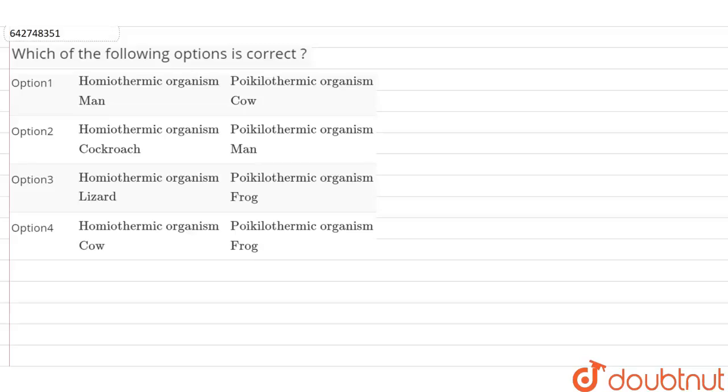In this question, we have to look at the given options and identify the correct answer. In each of the options, we have been given an example of homeothermic and a poikilothermic organism.